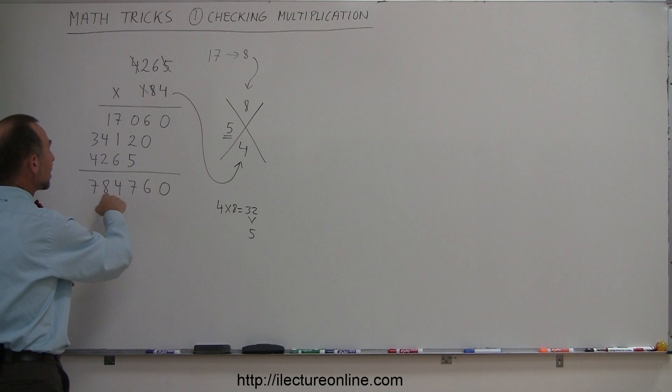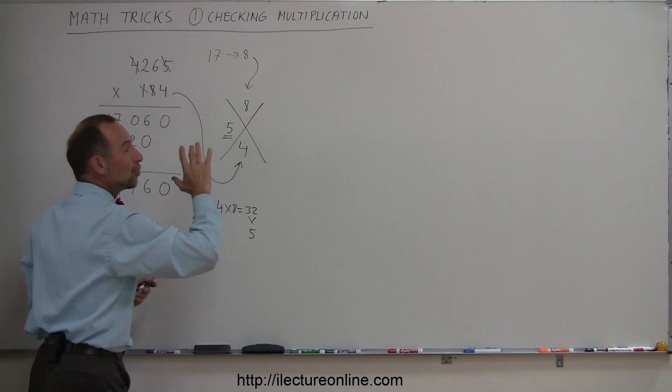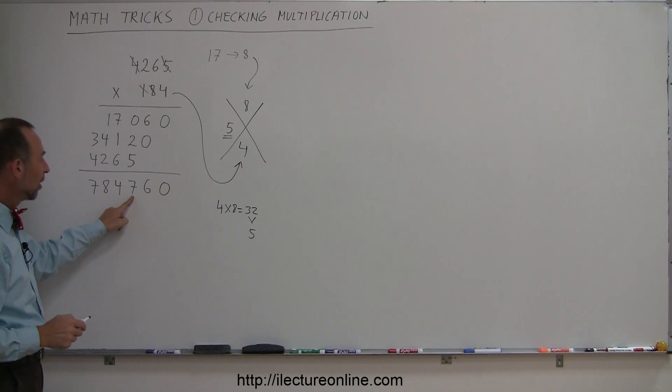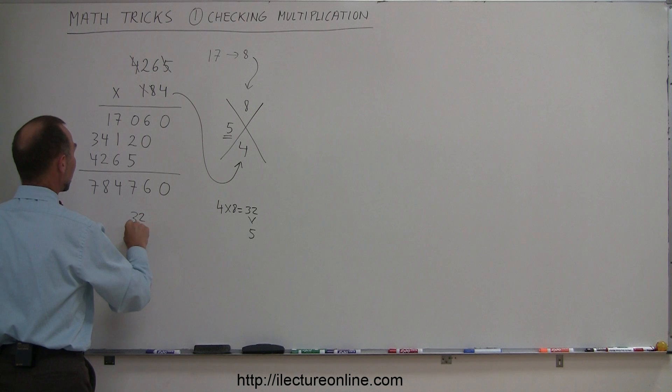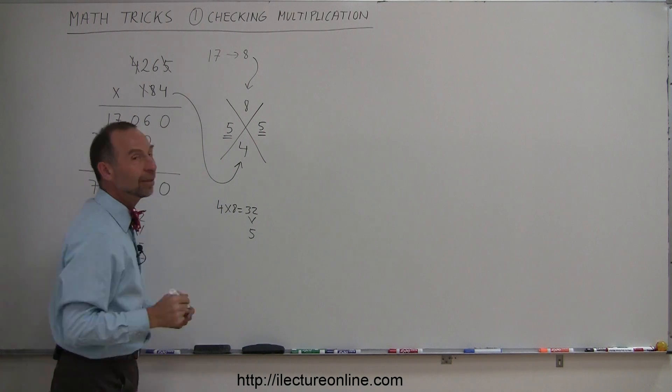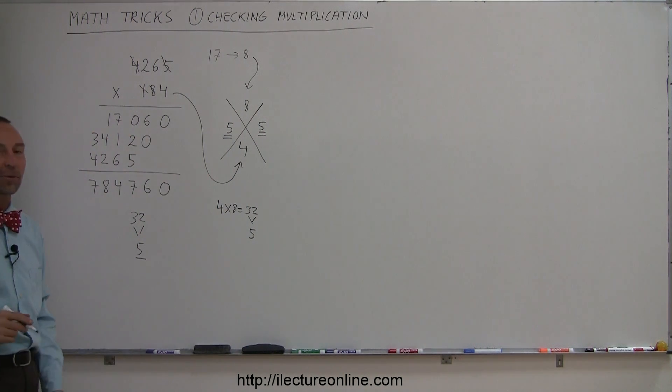Now you take the answer right here and add up all the numbers together. If they add up to 5, your answer is correct. So 7 plus 8 is 15 plus 4 is 19 plus 7 is 26 plus 6 is 32. Add them all together you get 32, then add the 3 and the 2 together you get 5. The 5s are equal, therefore I had this correct.